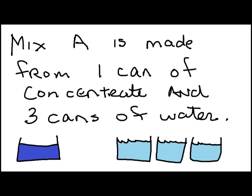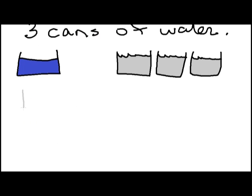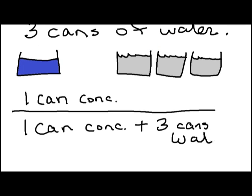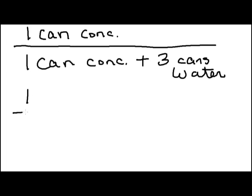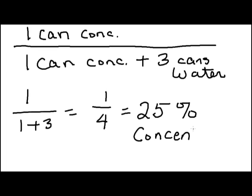Concentrate is dark blue. So that's going to be one can of concentrate to a total of four cans of mix, one plus three. Which turns out to be one to one plus three is one to fourth, or 25%. So it's 25% concentrate.